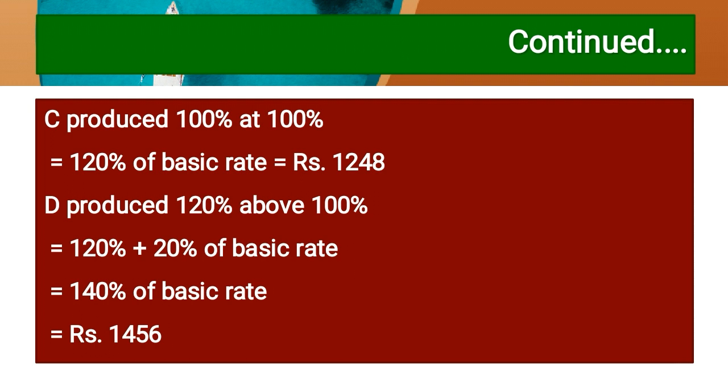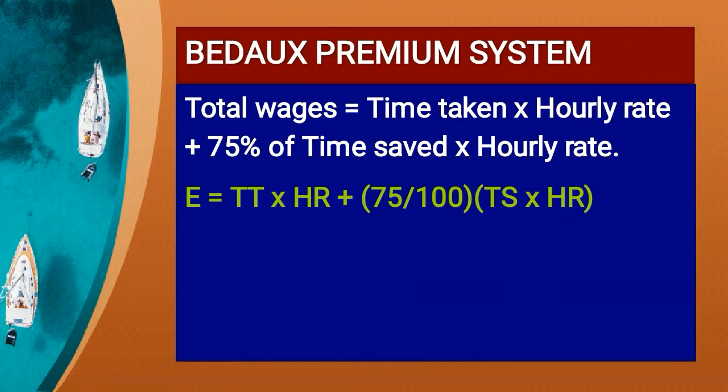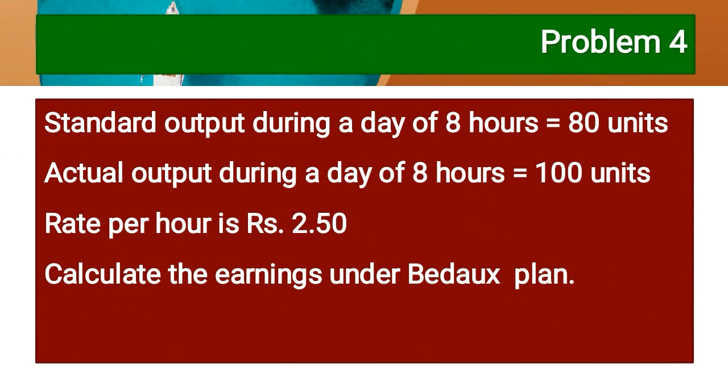Next we are going to Budox Premium System - the last incentive system. The formula is: Total Wage = Time Taken × Hourly Rate + 75% of Time Saved × Hourly Rate. It is more or less the same as Halsey, but here 75% of time saved is used. Problem: Standard output during a day of 8 hours is 80 units.